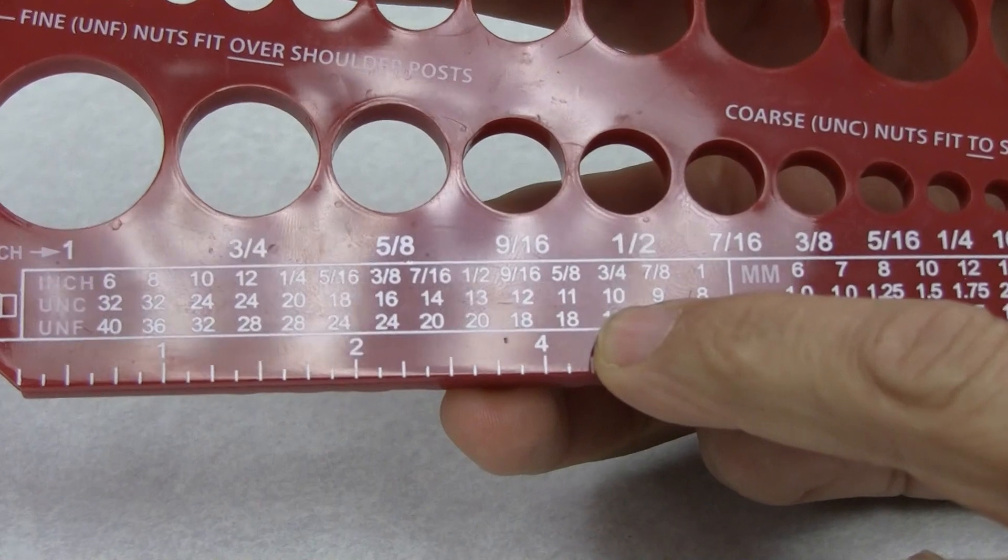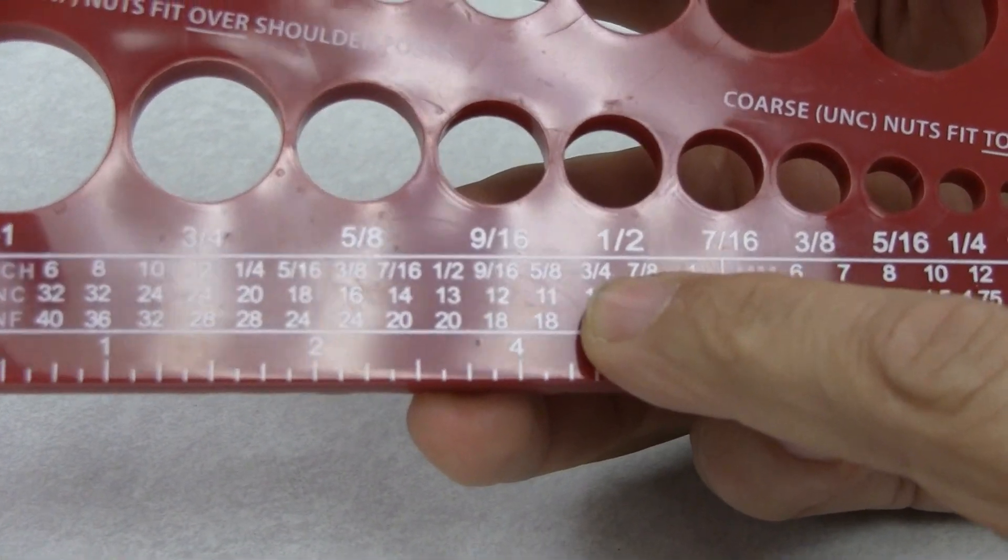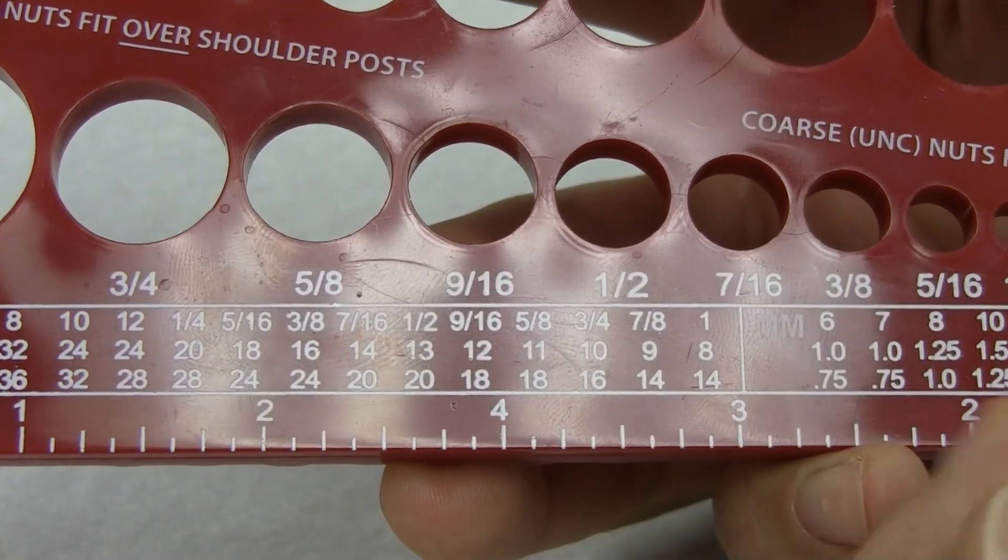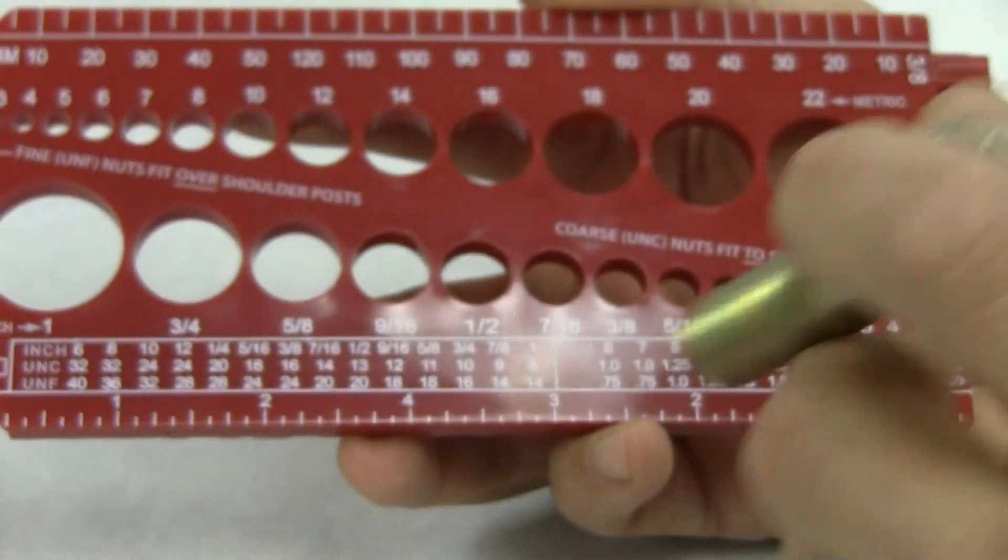I see below 5/8 that there are two different thread pitches, 11 threads per inch or 18 threads per inch. So in this case, I measured 11 threads per inch. That would be the correct thread pitch for this size of bolt.